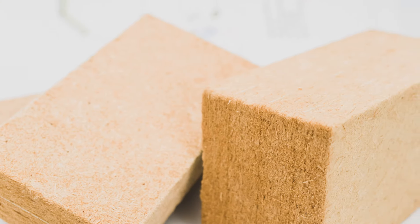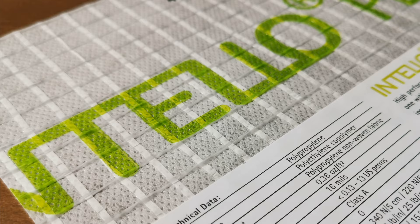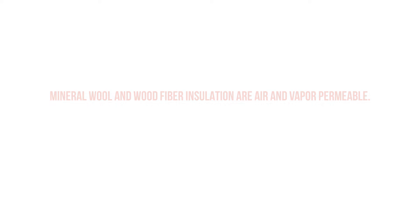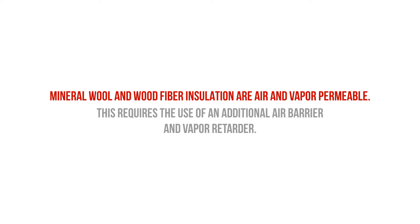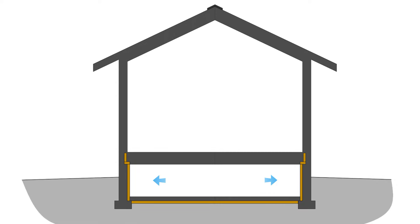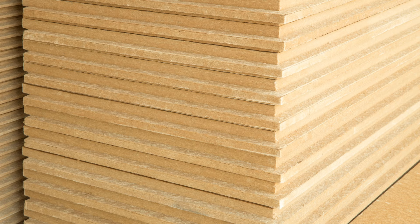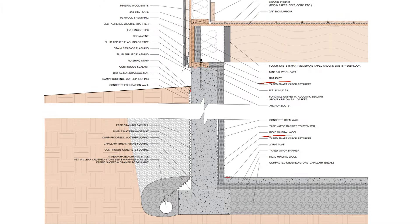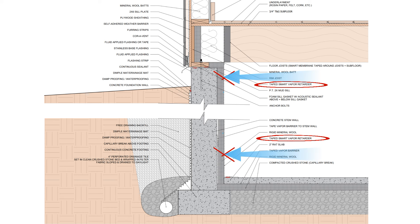Materials like mineral wool and rigid wood fiber can also be used to insulate conditioned crawl spaces successfully when combined with a smart vapor retarder. Mineral wool and wood fiber insulation are both air and vapor permeable and require that moisture-laden interior air is controlled and prevented from diffusing through the insulation and condensing on the cold foundation walls. A smart vapor retarder membrane can be used to prevent vapor diffusion into the foundation walls but allow moisture to dry into the conditioned crawl space if humidity increases or if there's a leak through the stem wall.